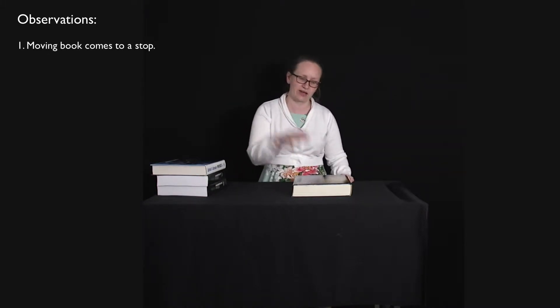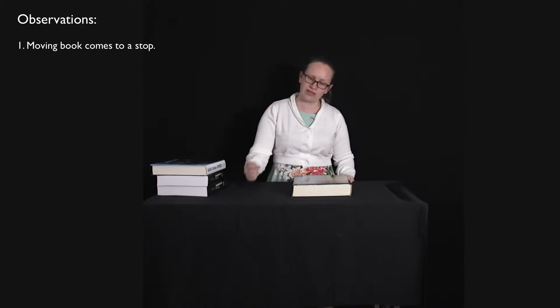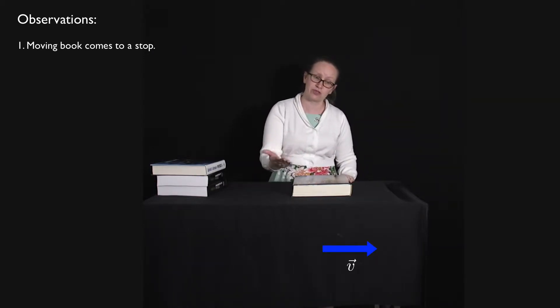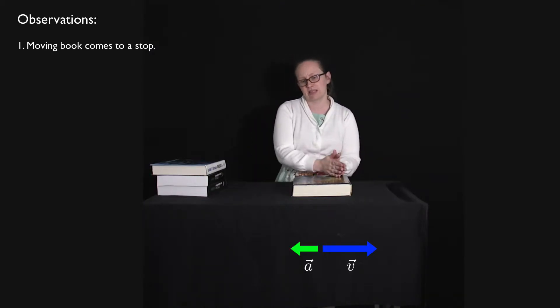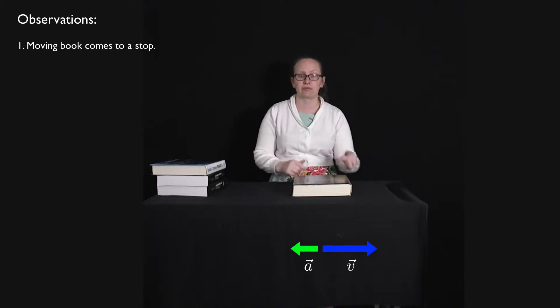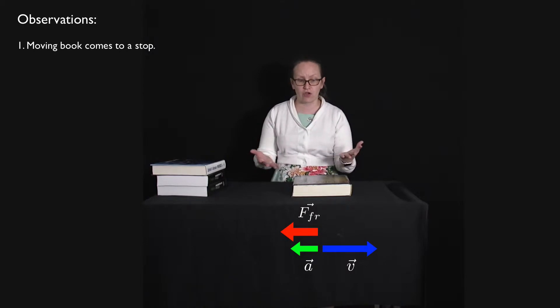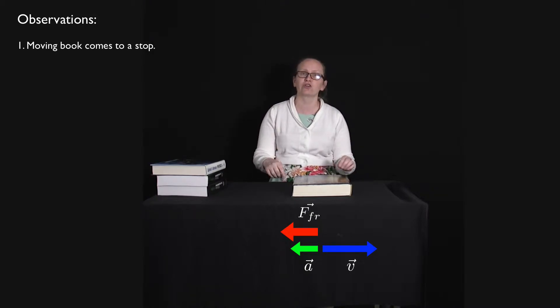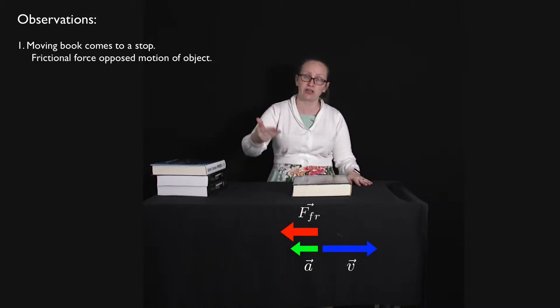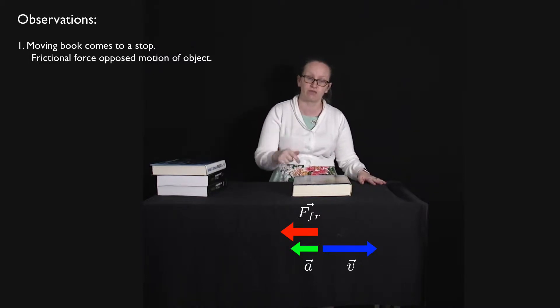Observation number one: I've got a textbook here. If I push it, it accelerates away from my hand. When I let go, it travels along the table but quickly slows down and comes to a stop. Because it was traveling in one direction and slowed down, the acceleration is in the opposite direction. Newton's second law tells us there must be a force in that direction — in this case, a frictional force. The frictional force opposed the motion of the object, acting in the opposite direction to the velocity.